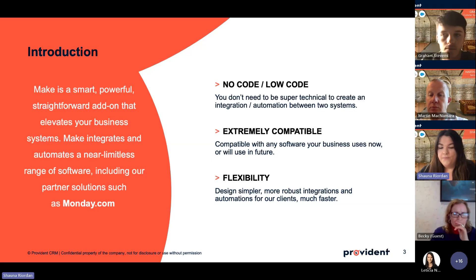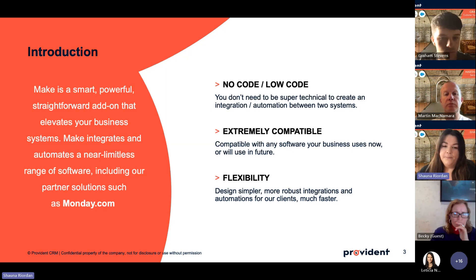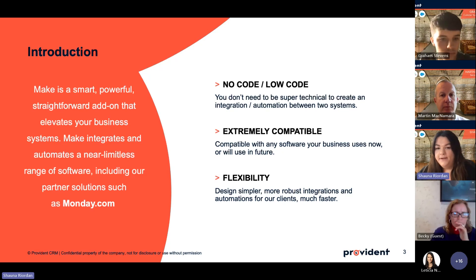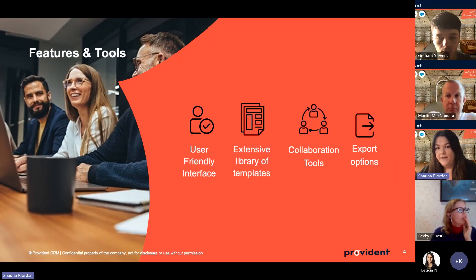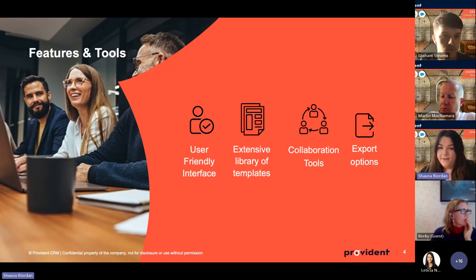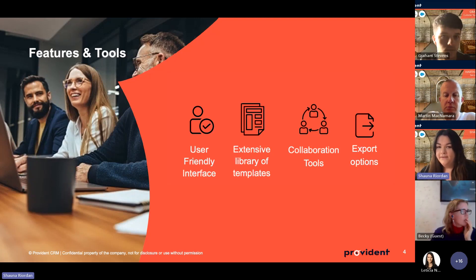Make.com is extremely compatible - we have yet to find any software that doesn't work with it. It's extremely flexible, the design is simple and easy to use. It has more robust integrations and automations which means it's much faster, resulting in better solutions within a better timeline. It has an extensive library of templates, so for popular systems like Jira you can click a template, connect your accounts, and you're good to go.